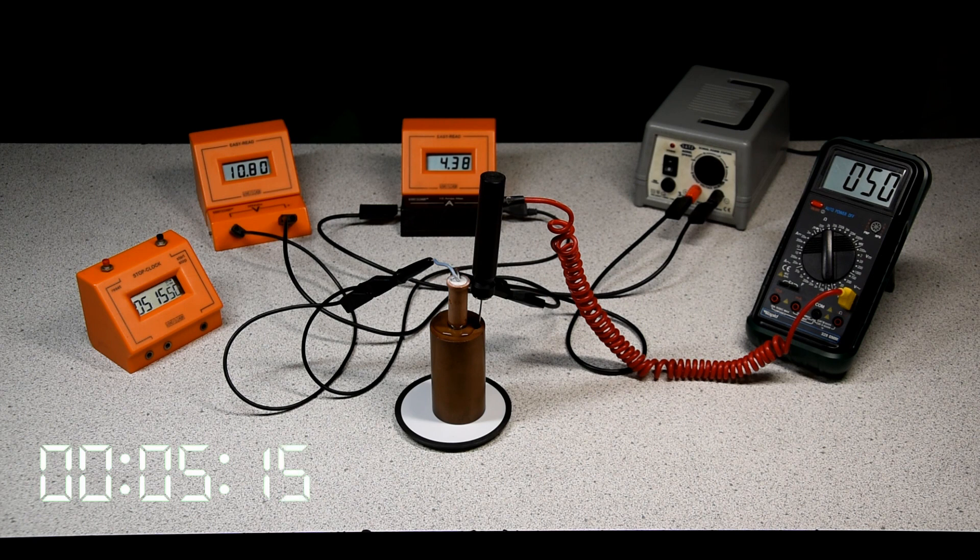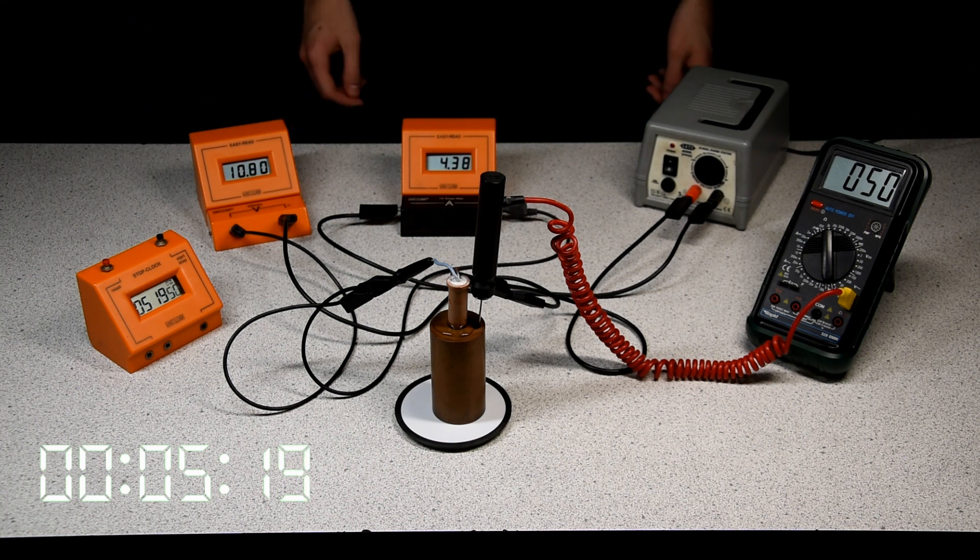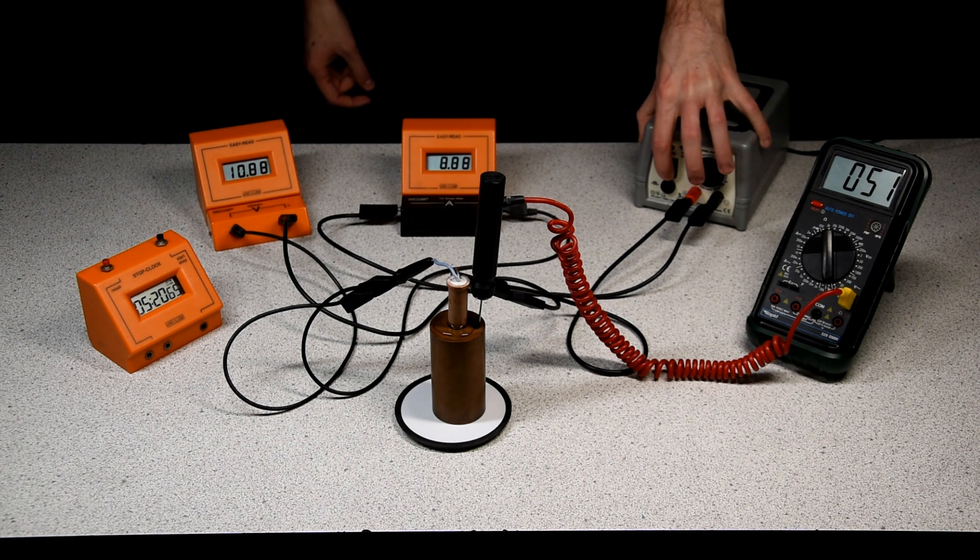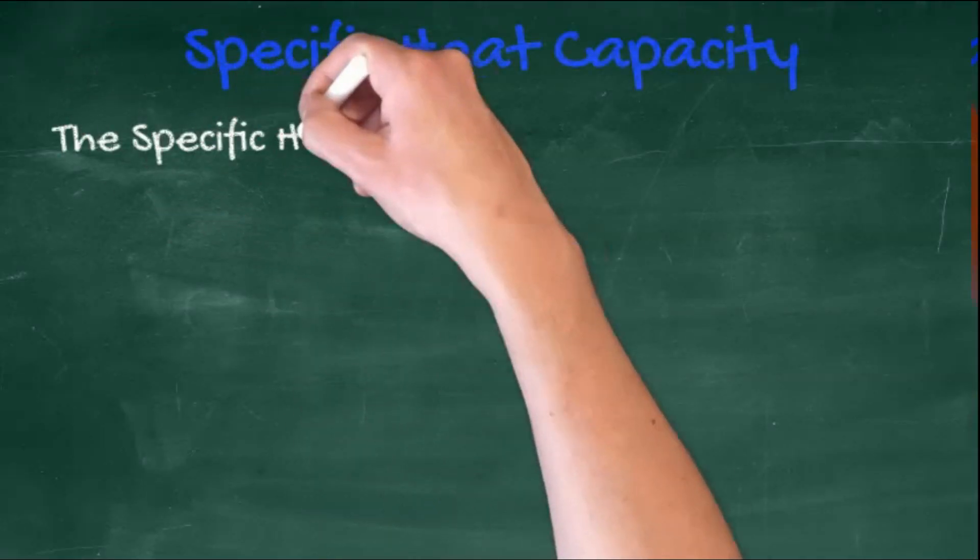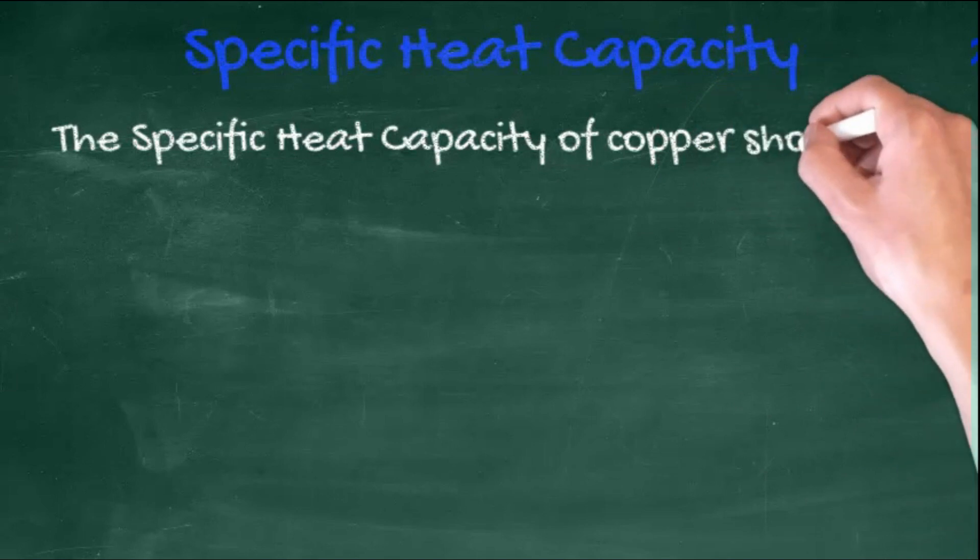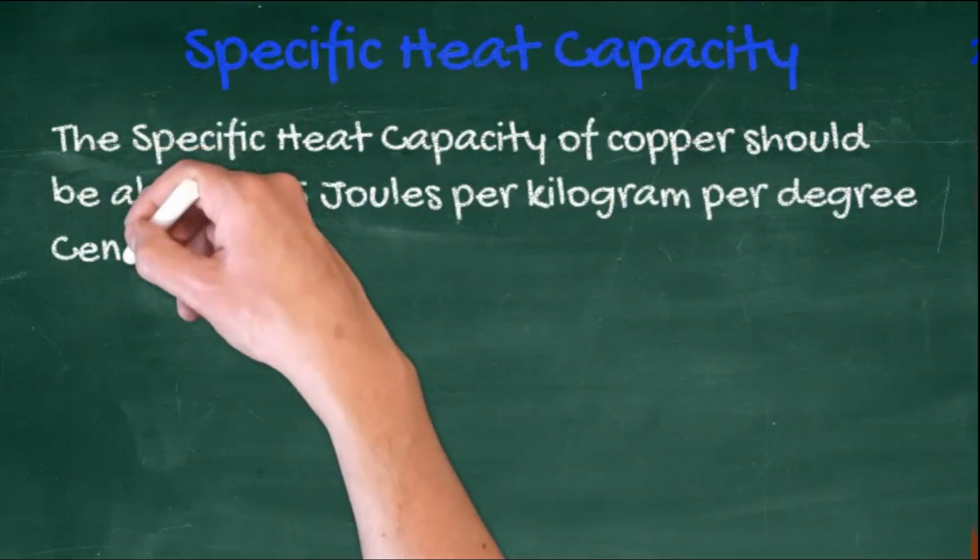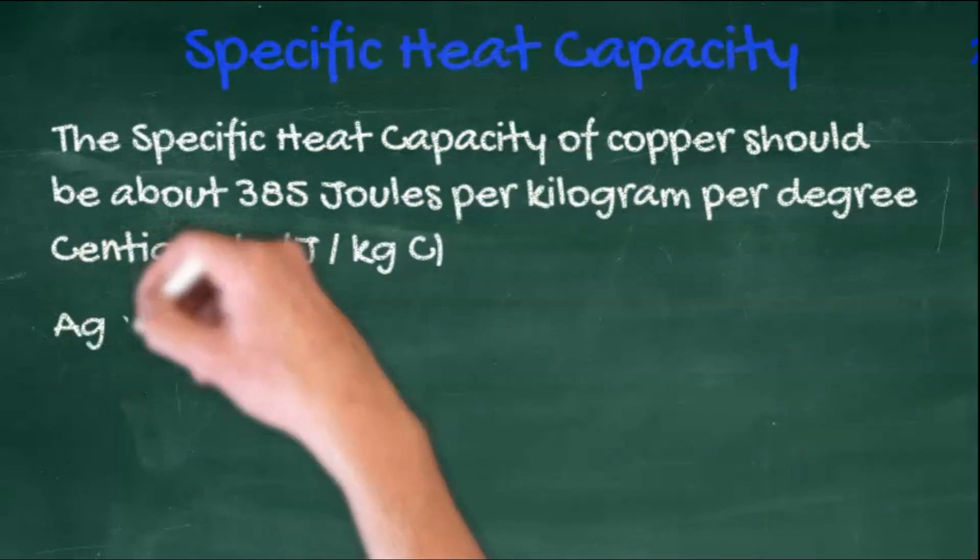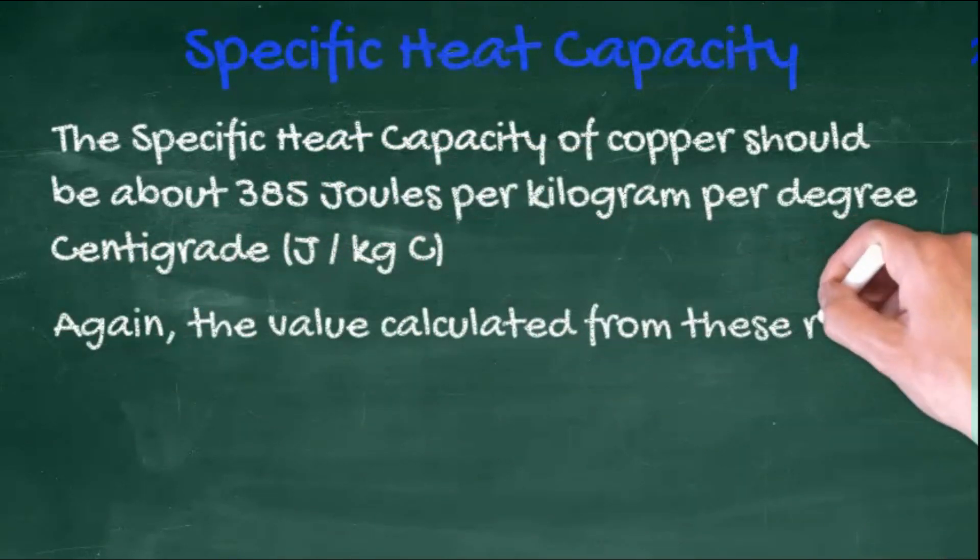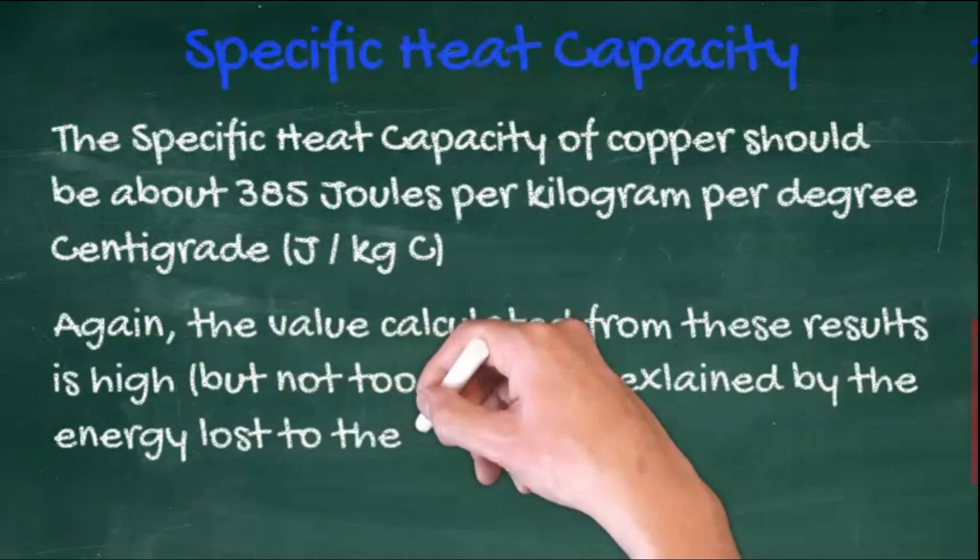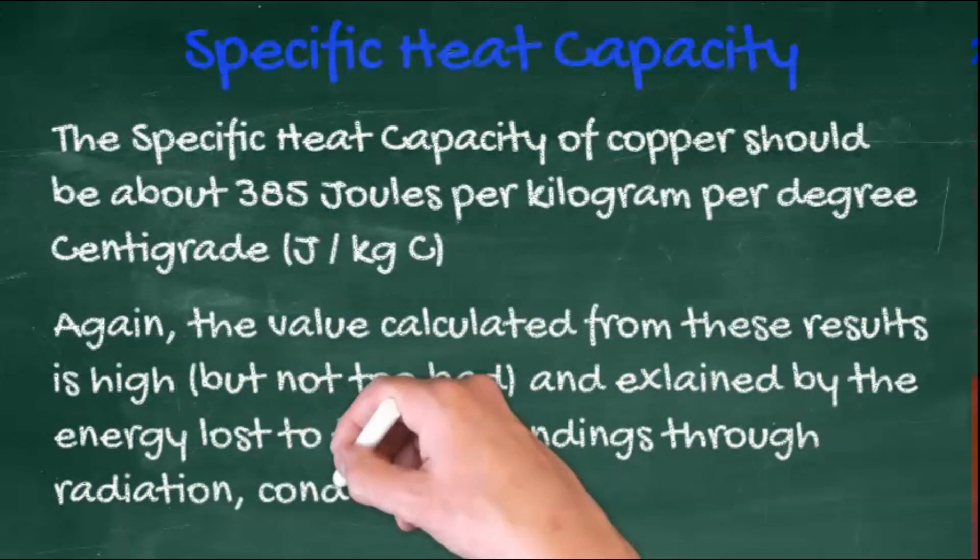We know that the mass of the copper block was one kilogram, so we have all the information needed to calculate the specific heat capacity of copper. This value should be about 385 joules per kilogram per degree Celsius. Again, the value calculated from these results is high, but it's not too bad, and it can be explained by the energy lost to the surroundings again.